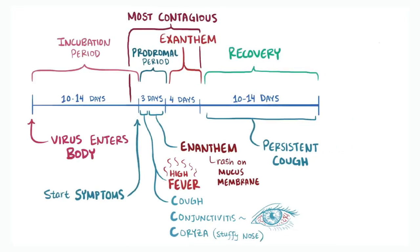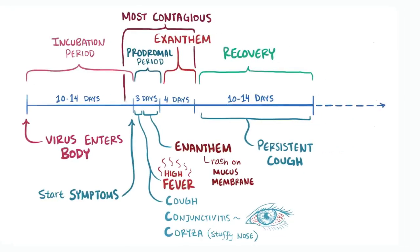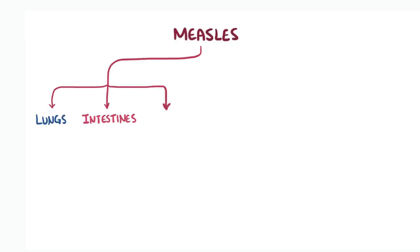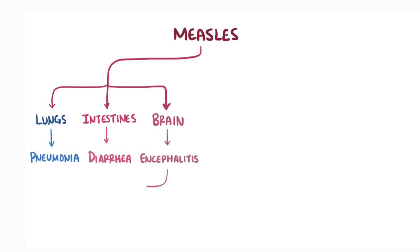The good news is that once someone has recovered from measles, they have lifelong immunity. Since measles affects various organs like the lungs, the intestine, and the brain, it can lead to complications like pneumonia, diarrhea, and on rare occasions, encephalitis — all of which can lead to death.